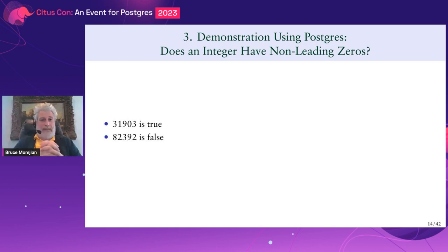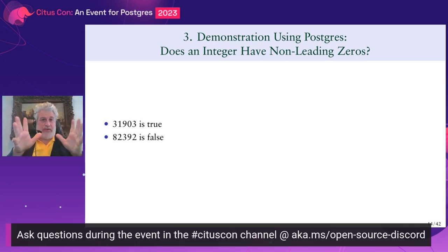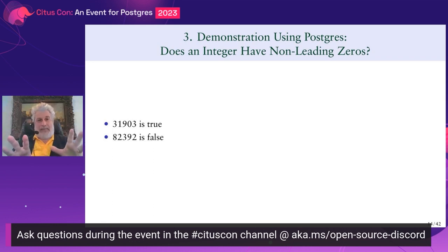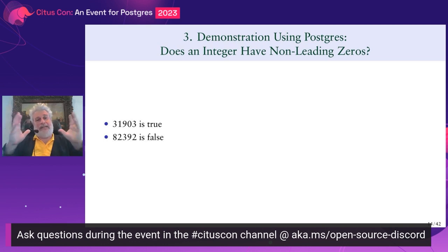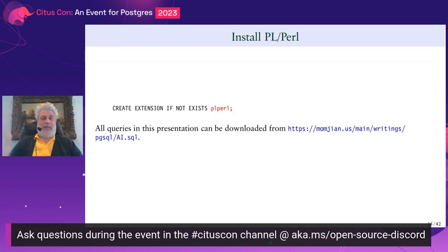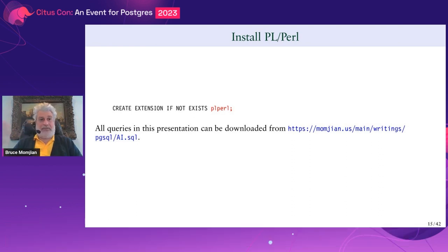Let's look at a demonstration. The question we're going to solve is whether an input number has a zero in it. The first example number has a zero in the tens position; the second does not. We're going to set up an AI system that can predict, given a number, whether it has a zero or not. Yes, it's a silly example, but it's easy to explain. We're going to use PL Perl — a stored procedure language you load into Postgres so you're running Perl inside Postgres. If you want to run the queries yourself, there's a URL in blue where you can download the SQL and practice it.